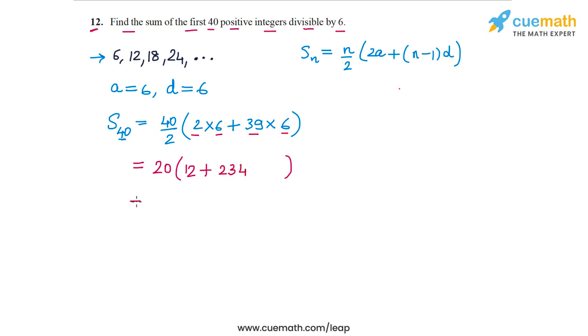This is equal to 20 into 12 plus 234. So 234 plus 12 is 246. So 246 into 20, this is equal to 4920.